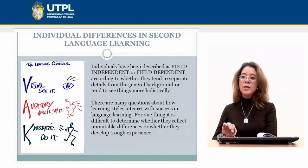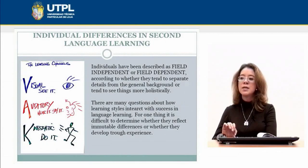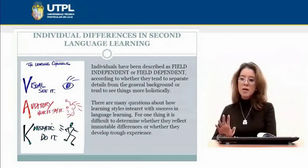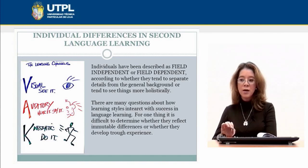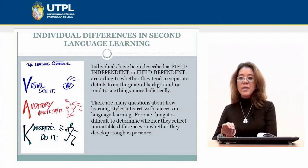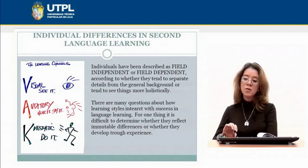We will also review learning channels. Individuals have been described as field independent or field dependent, according to whether they tend to separate details from the general background or tend to see things more holistically. There are three channels we can use when we learn: the visual channel — what we see; the auditory channel — what we hear; and the kinesthetic channel — what we do. With these channels, we can understand how our learners can learn a second language.